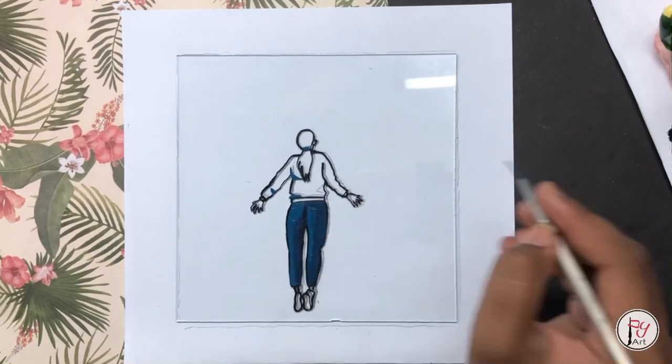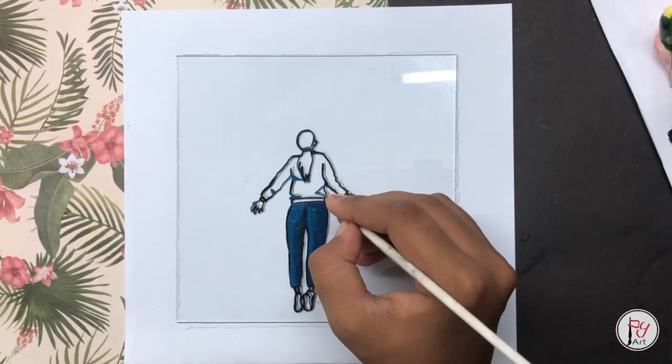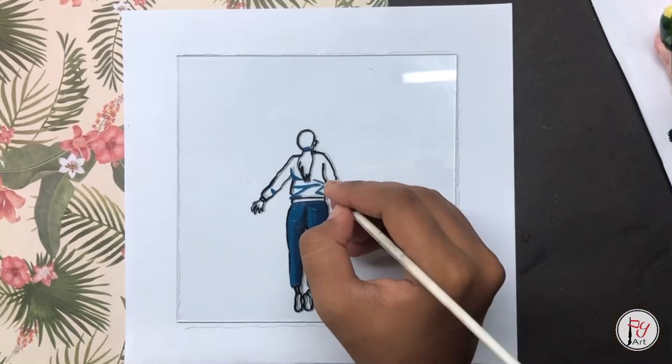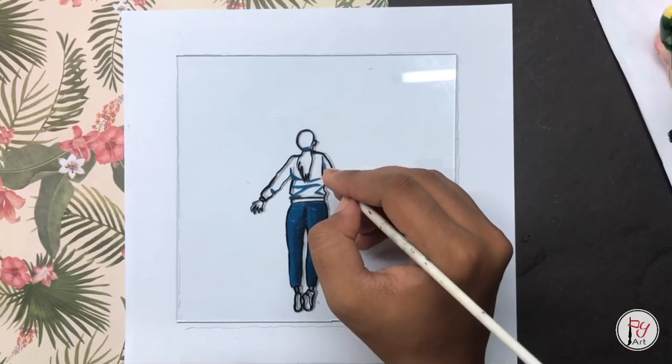Next, we will complete the bottom. We will do the same procedure. First, we will fold the cloth. Then we will draw the line. Then we will highlight it.